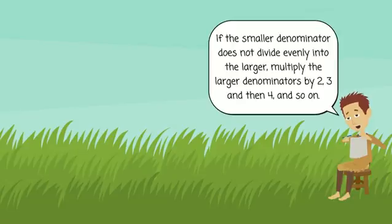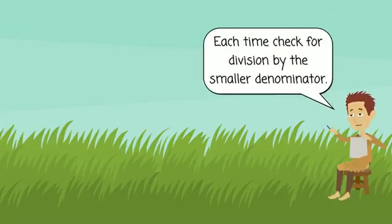If the smaller denominator does not evenly divide into the larger, multiply the larger denominators by 2, 3, and then 4, and so on. Each time check for division by the smaller denominator.